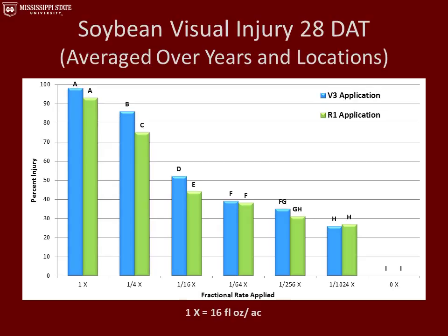This graph represents soybean visual injury 28 days after the applications were made, again averaged over all years and locations. With the 1x rate we had greater than 92% visual injury for either the V3 or R1 growth stage. With the lowest application rate, the 1/1024x rate, we had greater than 25% visual injury at both application timings. Overall, this graph shows a little bit more visual injury than we saw at 14 days.